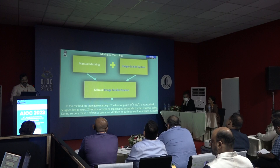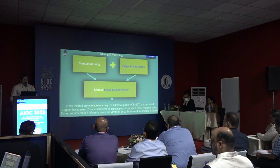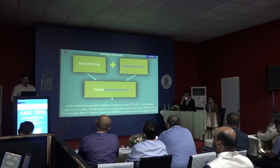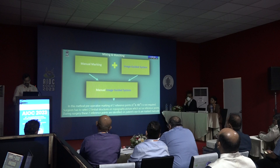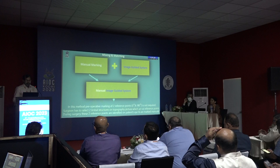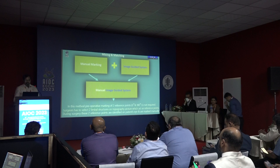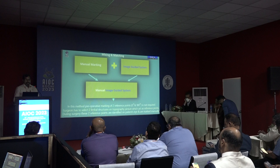In this method, preoperative marking of two reference points at 0 and 180 degrees is not required — no preoperative markings. The surgeon selects two prominent limbal structures on the topography picture which act as reference points. During surgery, he identifies them on the patient's eye and the topography picture, marking them manually just before putting the ring on the eye. The marking is done at the time of rotation of the eye ring, so there are no chances of smudging or wipe-out of the marks. It is based on the principle of the image guided system, so it eliminates error due to cyclotorsion and head tilt.